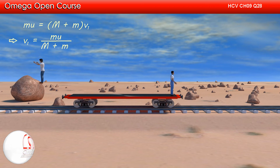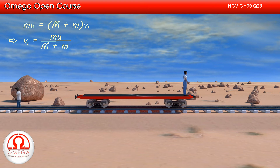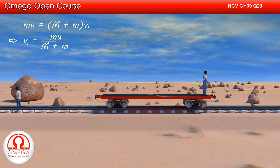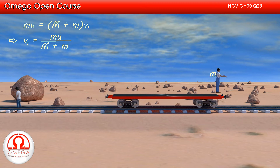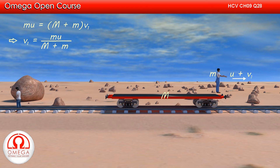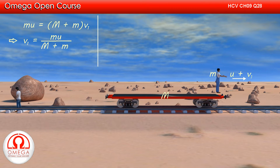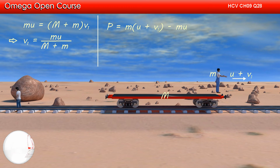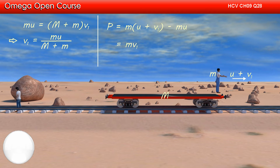When the second man starts to jump, the car is moving with speed v1 and his speed with respect to the car has to be u. Therefore, his speed with respect to the ground at his jump is u + v1 towards the right. The man on the right jumps off with speed u + v1 towards right, and the man on the left had jumped off with speed u towards left. Hence, the total momentum of these two men is m(u + v1) − mu towards right, which simplifies to mv1 towards right.